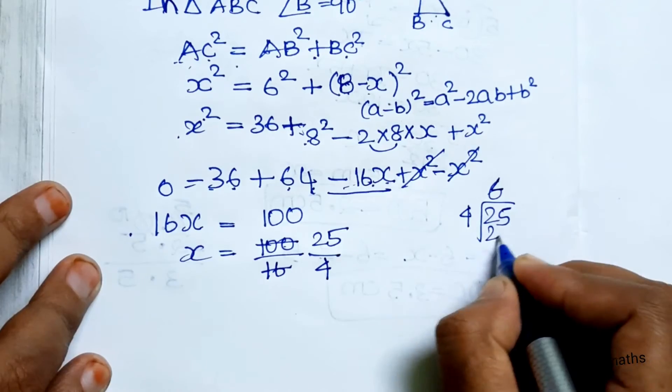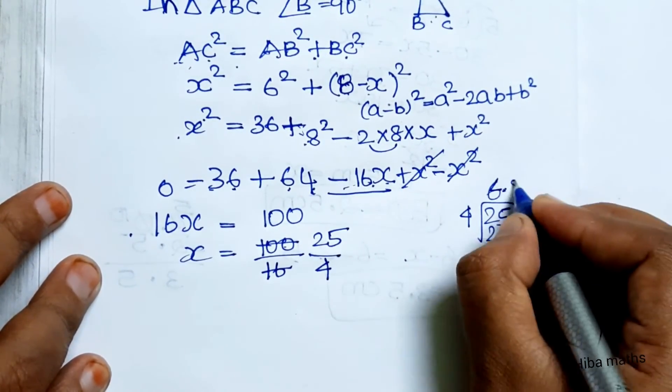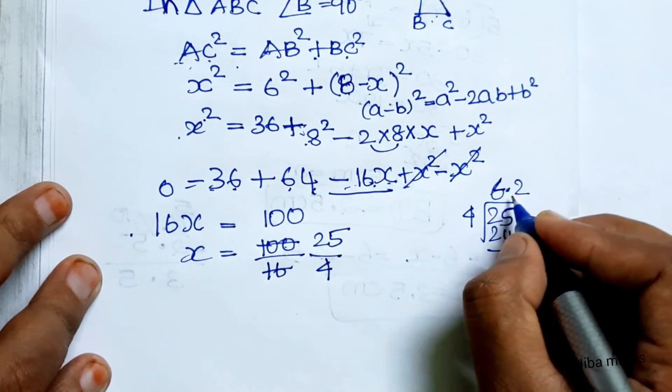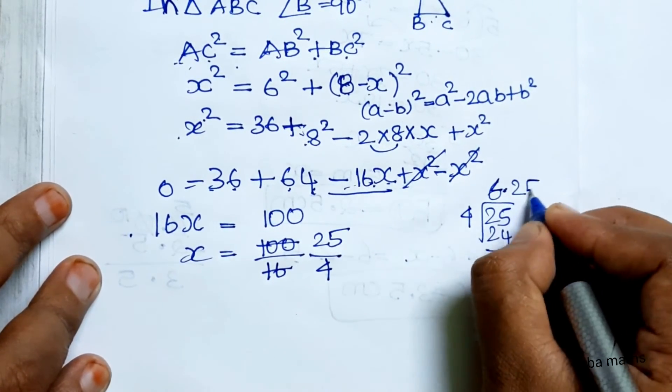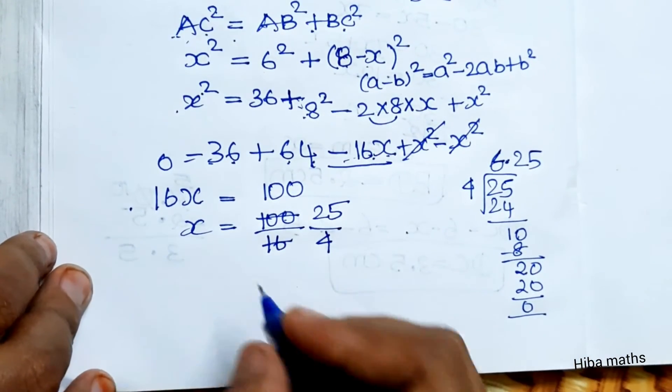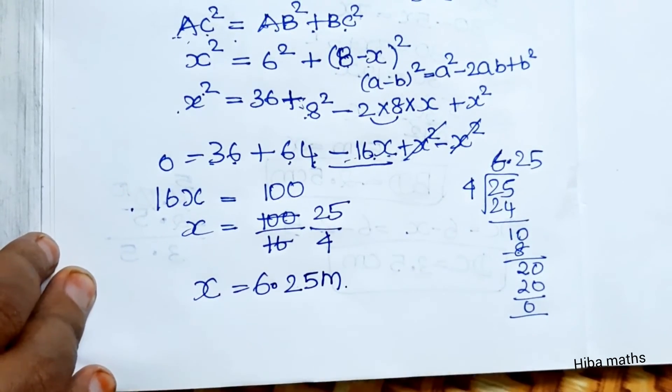100 divided by 16: in the 4 times table, 4 times 25 is 100, 4 times 4 is 16. Dividing: 6.25. The answer is 6.25 meters. The value of x is 6.25 meters.